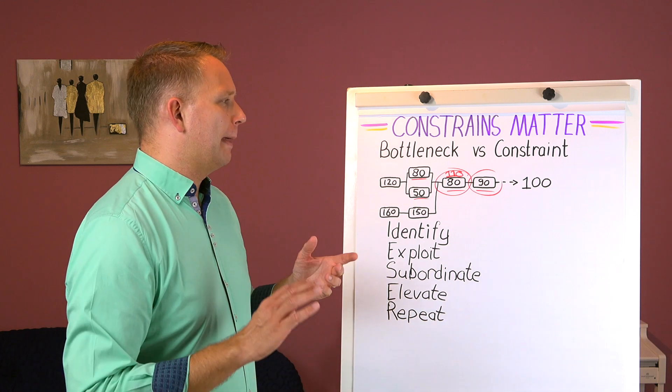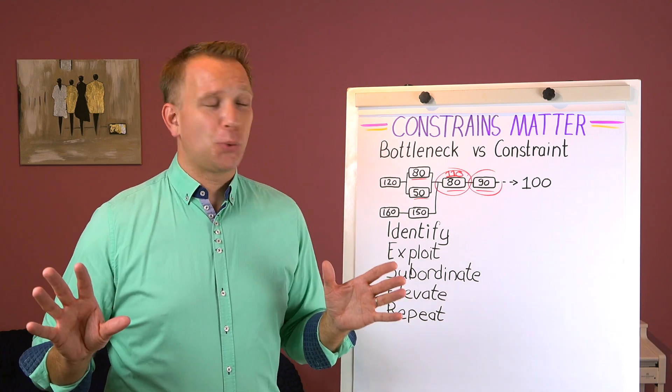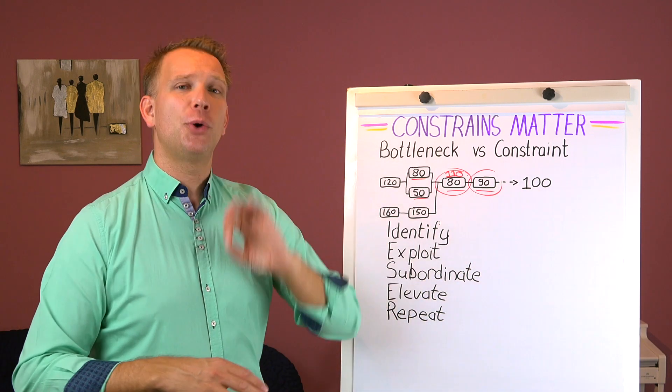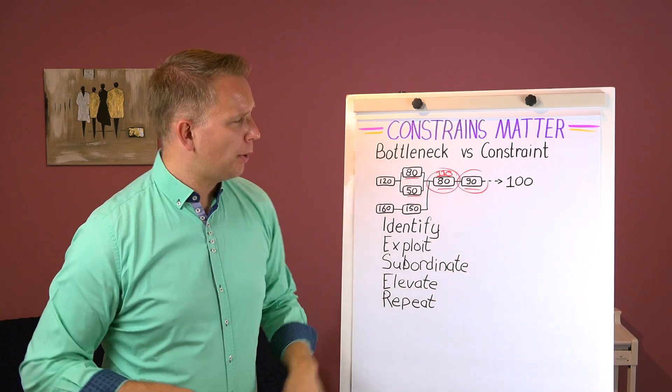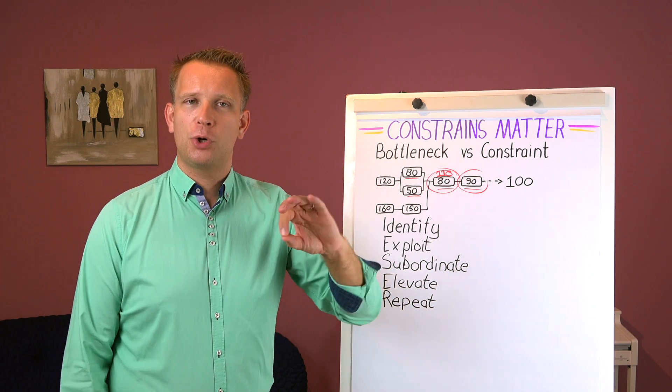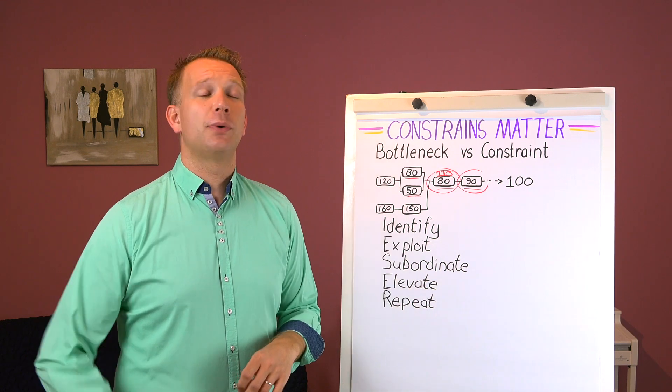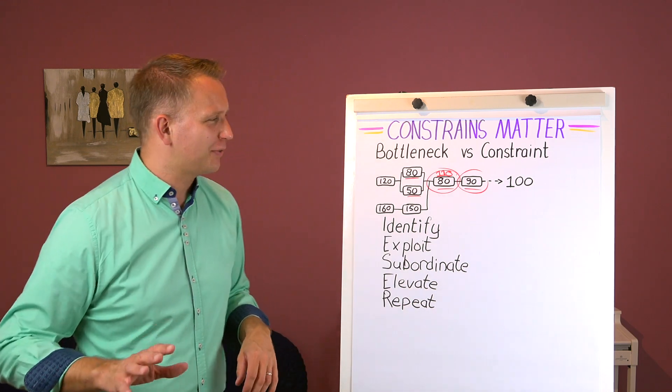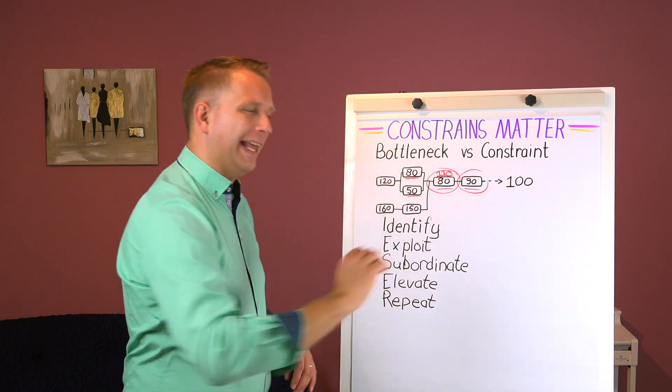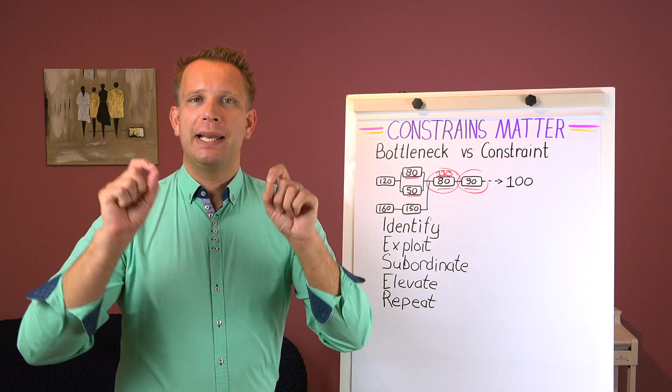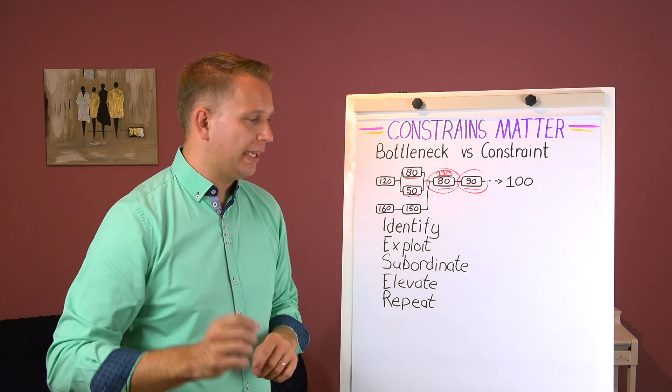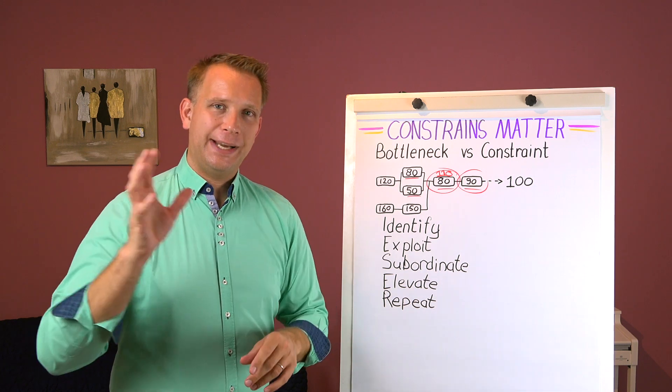Eliyahu Goldratt advises to keep your manufacturing under market demand, so to be happy that you have a constraint that is in your factory. Because that way you will just always be working and you will have the power to steer your sales instead of the other way around. But most organizations, they do at least want to be able to serve that market that they know is there. But as soon as you go over that, working on the market is also in the matrix.